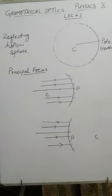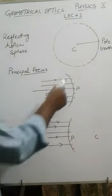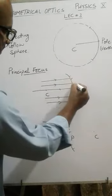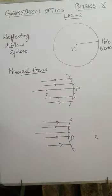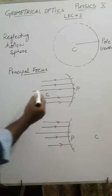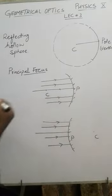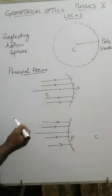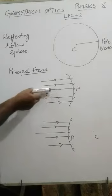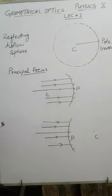I have shown a concave mirror here. The outer surface has lines indicating it is opaque, and the inner surface is reflecting. This is the pole, this is the center of curvature, and this line is the principal axis. These other lines are parallel to the principal axis.